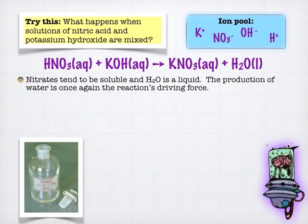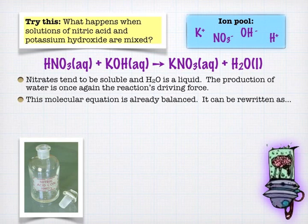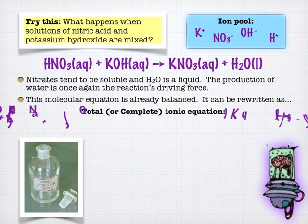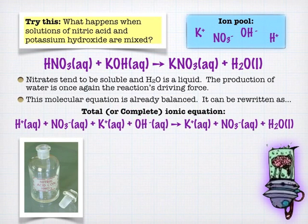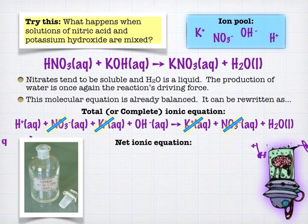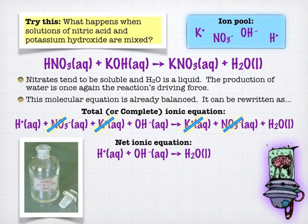Again, potassium nitrate, group one metal and a nitrate is going to be very soluble. So we can tease out our molecular equation as before, cancel out our spectators, and end up with our total ionic, I mean, our net ionic equation, which, again, should seem very familiar by now. Hydrogen ions plus hydroxide yields water.